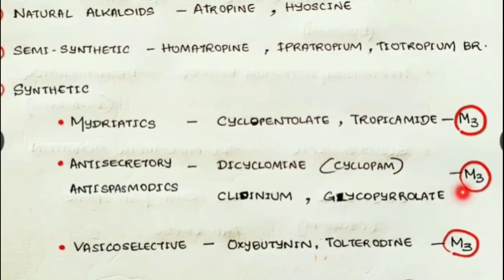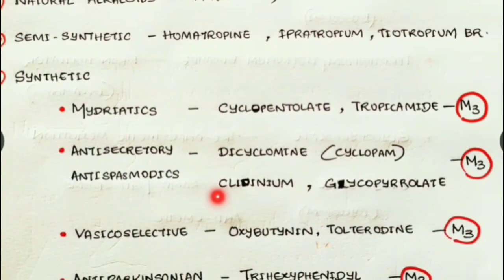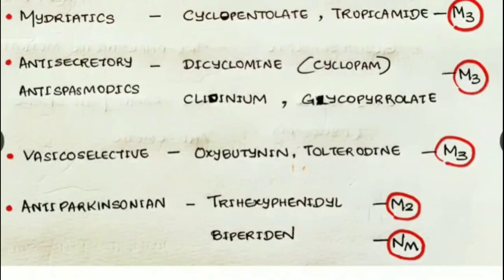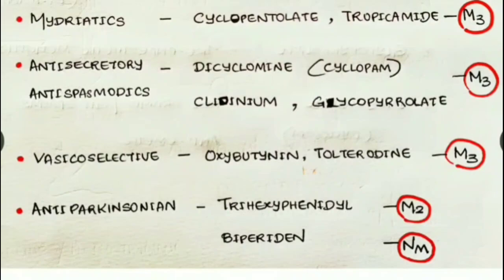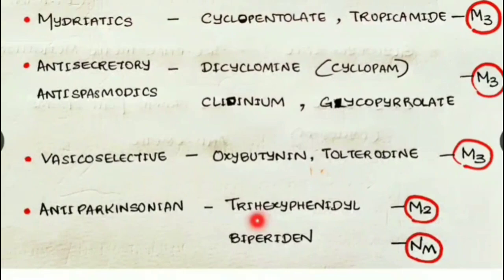Anti-secretory and anti-spasmodic drugs inhibit M3 receptors, producing effects opposite to exocrine secretory and smooth muscle excitatory activity. Examples include dicycloverine, cyclopam, tridihexethyl, and glycopyrrolate. Vesico-selective drugs inhibit M3 receptors at the urinary bladder, causing relaxation of the detrusor and urine retention; examples are oxybutynin and tolterodine. Anti-parkinsonian drugs inhibit M1 receptors to reduce tremor and rigidity; examples are trihexyphenidyl and biperiden, with some M2 inhibitory action.